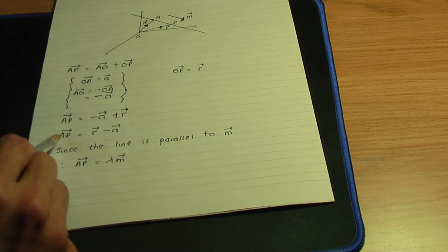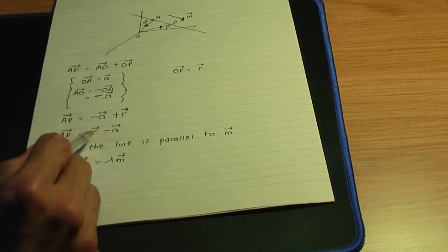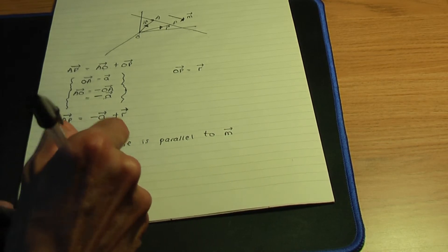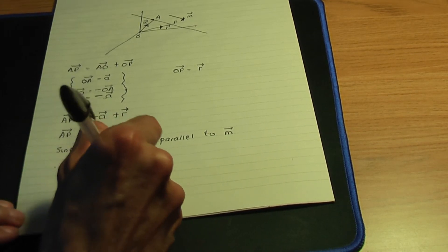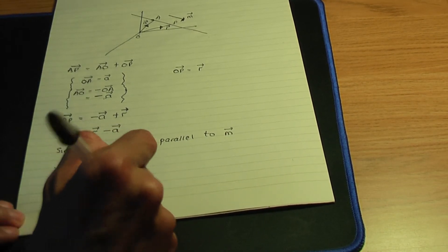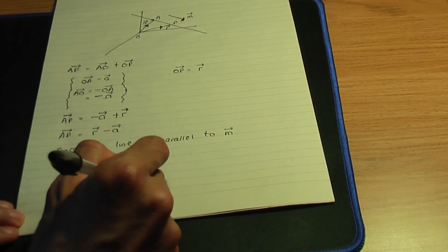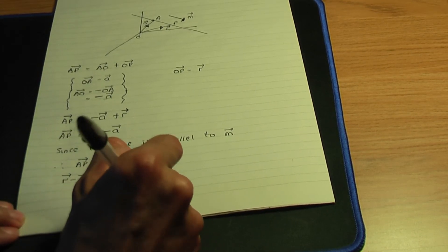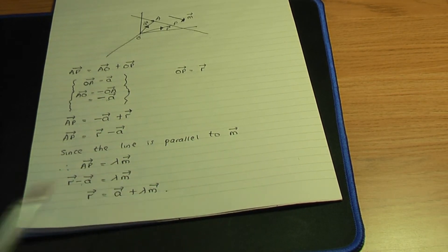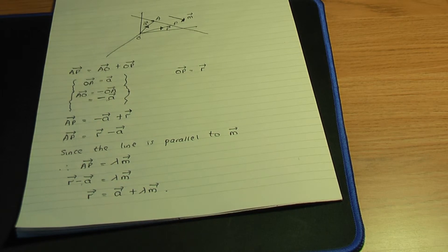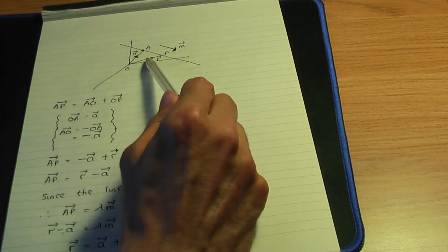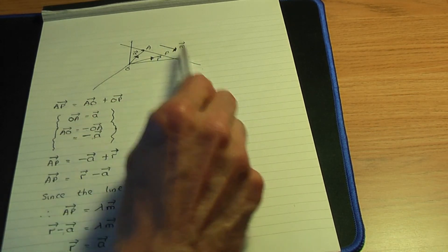Going to the previous step, we know the vector AP is r minus a. So replacing, vector r minus vector a will be lambda m. Rearranging, vector r will be — taking minus a to the other side — a plus lambda m. That is the formula to work out the vector equation of the line if you're given a fixed point on your line and a vector parallel to your line.